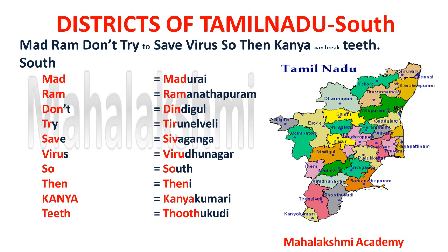Then 'then' stands for Theni; Kanya stands for Kanyakumari — it's a famous place I'm sure you're already aware of; and the last letter, teeth, T stands for Thoothukudi. So this short code — 'Mad Ram, don't try to save virus, then Kanya can break teeth' — covers all the south division districts of Tamil Nadu.